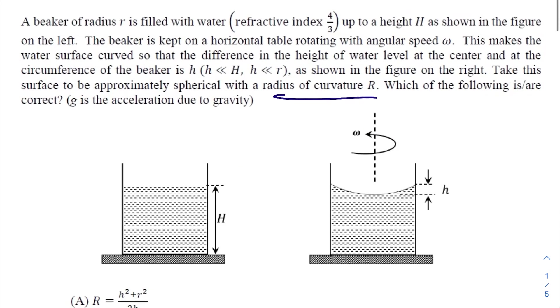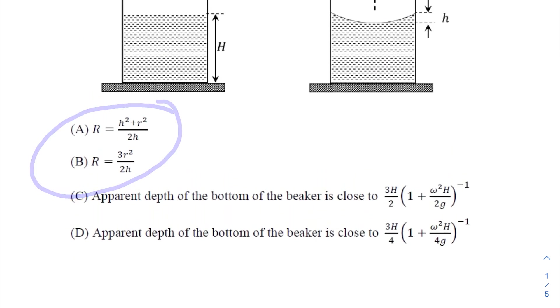So what are the options? Either A will be correct or B will be correct, so we need to check any one of these. Similarly, either C or D will be correct. So checking any one of this will give you the final answer - we don't have to check all four options.